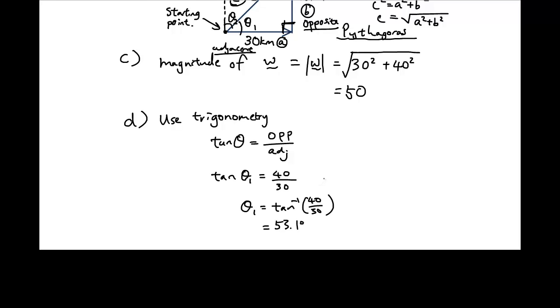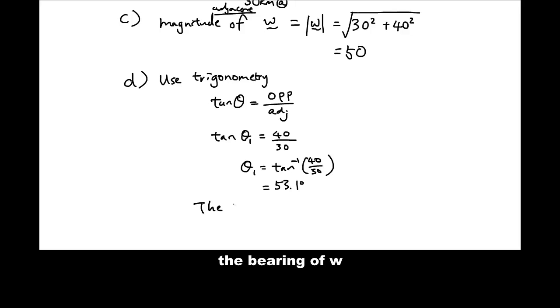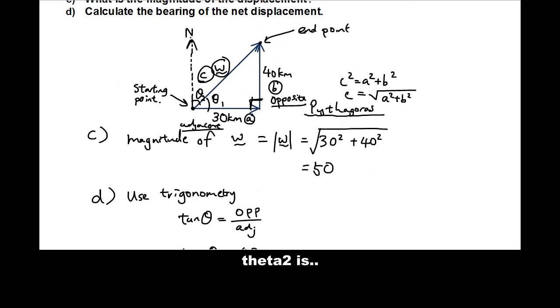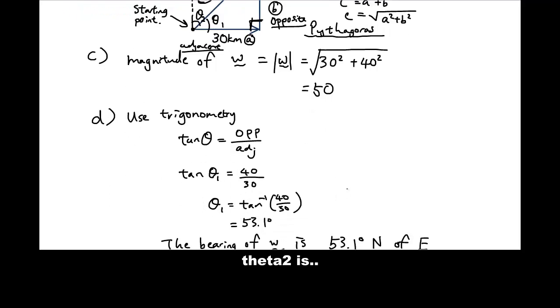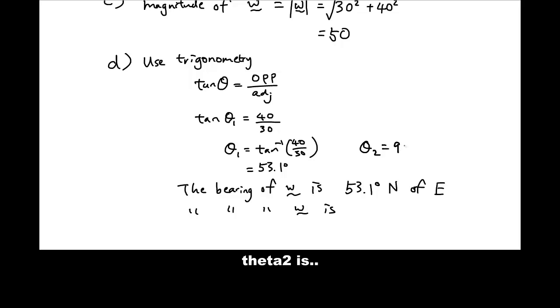So we can either say the bearing is, the bearing of w is 53 degrees, 53.1 degrees north of east. or we can say that the bearing of w is, and then we can find theta 2, which is going to be 90 degrees minus 51. So theta 2 is 90 degrees minus 53.1, which is, what's that, 36.9,